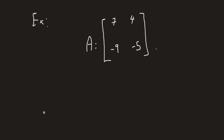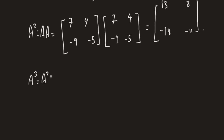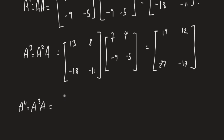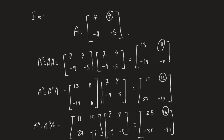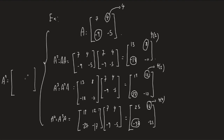Another example: compute successive powers of a second matrix — A squared, A cubed, and A to the fourth power. Note that elements in positions (1,2) and (2,1) follow a specific pattern. The element at position (1,2) is always 4n: it's 4, then 8, then 12, then 16. The element at (2,1) follows multiples of -9: -9, -18, -27, -36, so it's -9n.